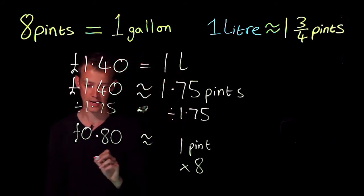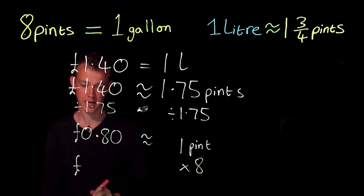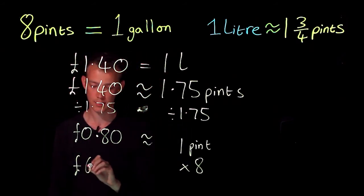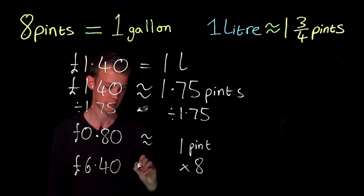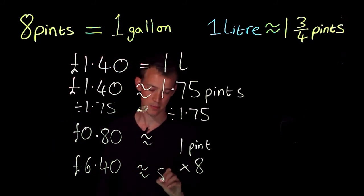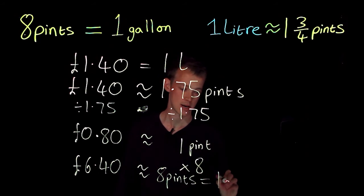And if I multiply my 80p by eight, eight times eight is 64, therefore this is going to be six pounds 40. And that's going to be equal to eight pints, and eight pints we know is equal to one gallon.